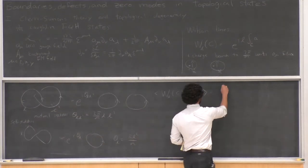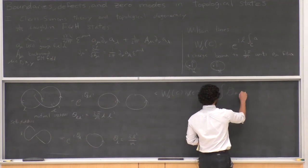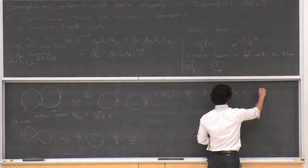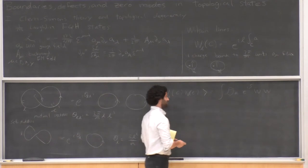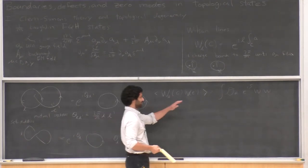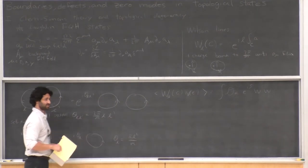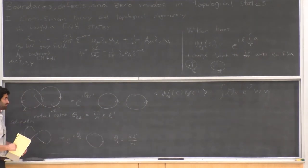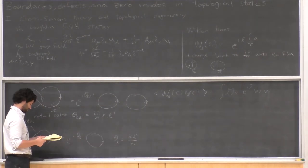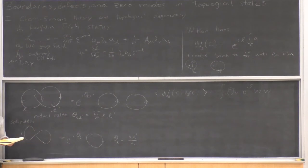To actually compute this expectation value, you would do it as a path integral in this action. What winds up showing up is the linking number of the two world lines. If you actually try to do the calculation, it's not that bad.